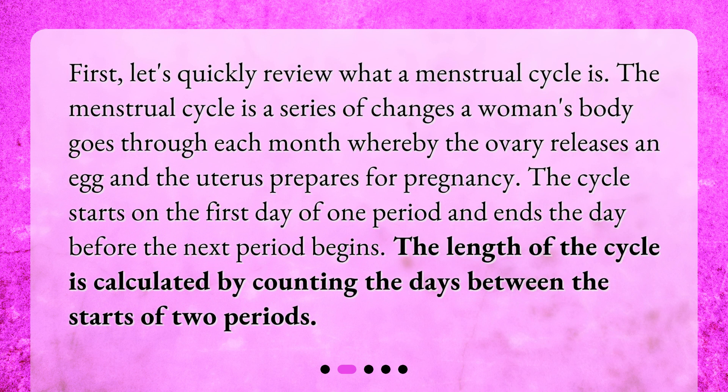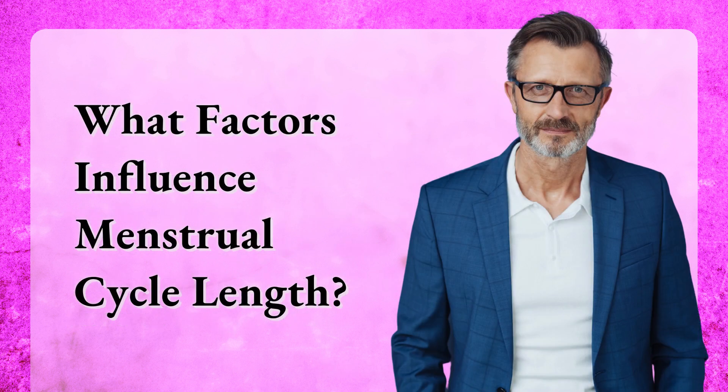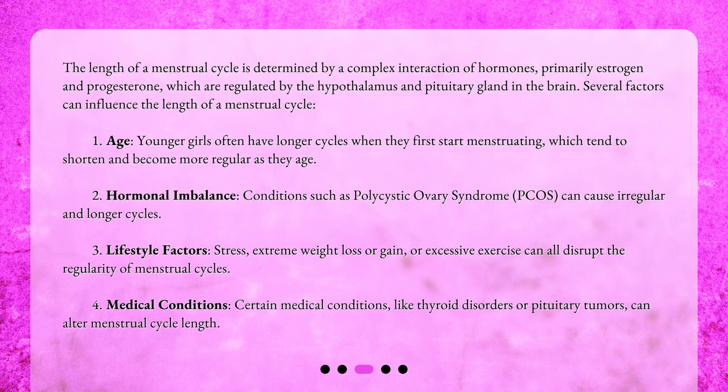First, let's quickly review what a menstrual cycle is. The menstrual cycle is a series of changes a woman's body goes through each month, whereby the ovary releases an egg and the uterus prepares for pregnancy. The cycle starts on the first day of one period and ends the day before the next period begins. The length of the cycle is calculated by counting the days between the starts of two periods.